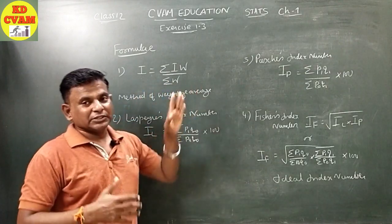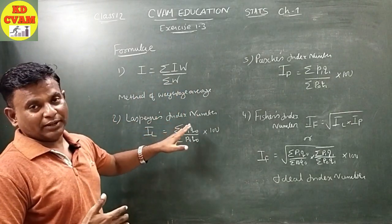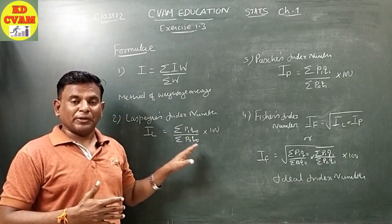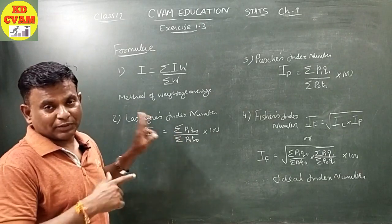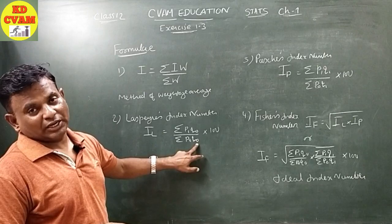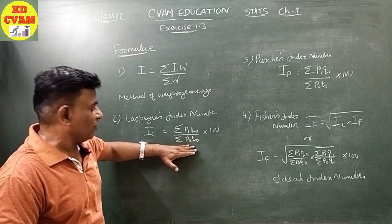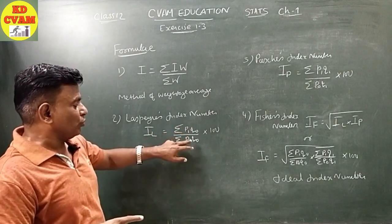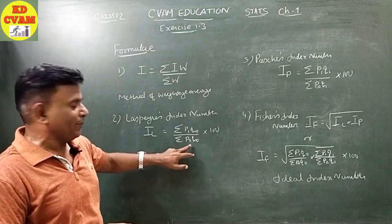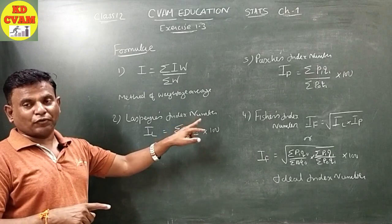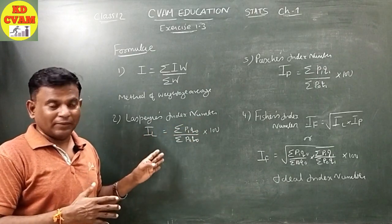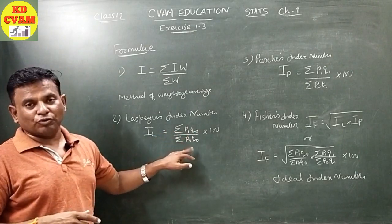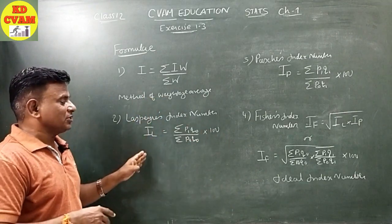Next is Laspeyres index number. In Laspeyres index number, the weighted mean is taken as P0Q0, meaning price of the base year and quantity of the base year. The relative price is P1 upon P0. So Laspeyres formula is: IL equals sigma P1Q0 upon sigma P0Q0 into 100. This is considered a very important formula for finding out Laspeyres index number.